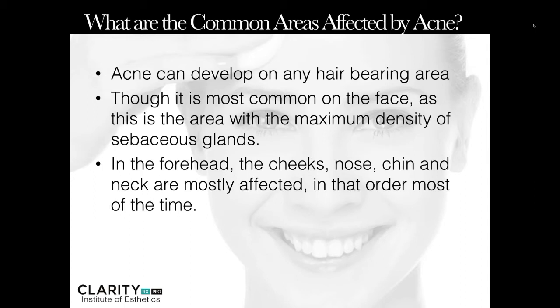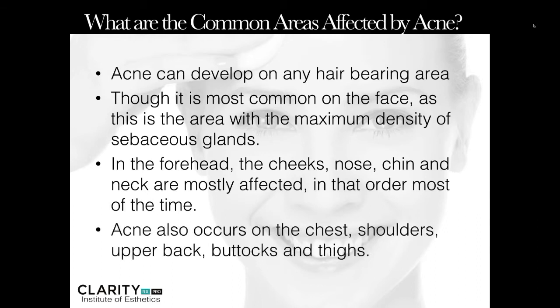It's not uncommon to see what I refer to as the wave of acne. It typically starts in the forehead, slowly works down to the cheeks and nose, then down to the chin, and onto the neck and body. In the same way, it starts to clear — once we see clearing in the forehead, it'll clear in the cheeks, nose, chin, neck, and then the body is last to respond. Acne also occurs on the chest, shoulders, upper back, buttocks, and thighs, so it's a good idea to address what clients are using for body washes.